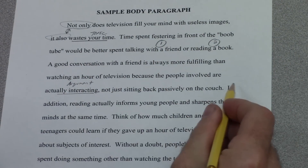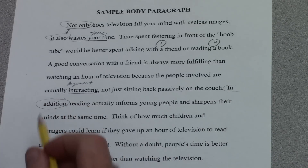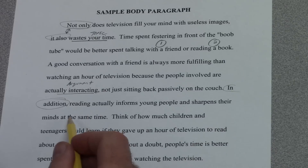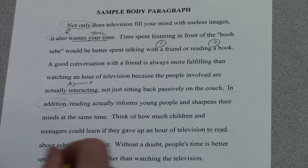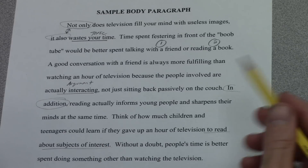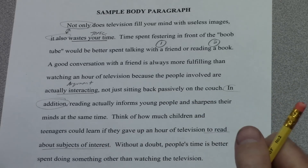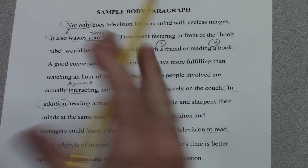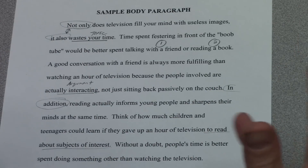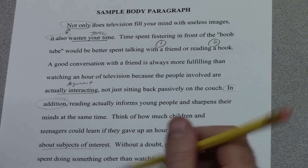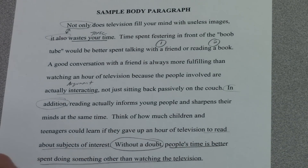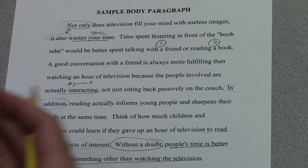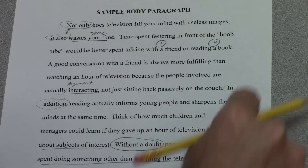'In addition' — here's a transitional phrase they used. 'Reading actually informs young people and sharpens their mind at the same time. Think of how much children and teenagers could learn if they gave up an hour of television to read about subjects of interest.' So they focus on how reading sharpens your mind, gives you information, and that you would learn much more if instead of watching TV you were reading. Here's their concluding sentence: 'Without a doubt, people's time is better spent doing something other than watching the television.' The concluding sentence wraps up the paragraph and pulls everything together.